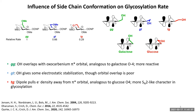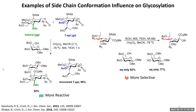Our lab has done pretty extensive work on the influence of side chain conformation during glycosylation. Here are a couple of examples. If we take this naturally occurring sialic acid donor, we find that the side chain is found exclusively in the GG conformation. Our lab synthesized an epimer at the seven position, which takes up the GT conformation in solution. When both of these are placed in a competition reaction, we find that only the GG conformer undergoes any glycosylation at negative 78 degrees. In fact, you have to raise the temperature to negative 60 to get any reaction of the GT compound, so clearly GG is more reactive.